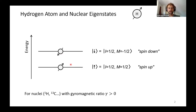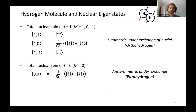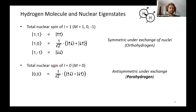Similarly, if we consider the hydrogen molecule H2, which consists of two protons, we find four energy states due to the addition of angular momentum, giving I equal to one or I equal to zero. For the I=1 state we have three azimuthal projections — one, zero, and minus one — forming a triplet. For the I=0 state we have m=0, and this is the parahydrogen state we are interested in today.